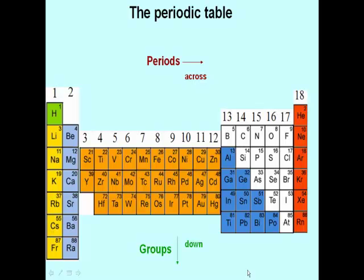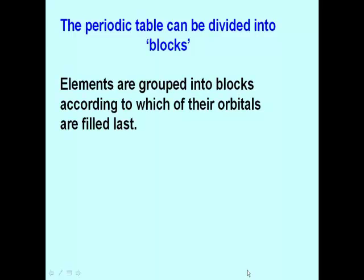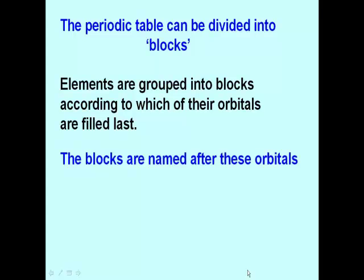Let us go back to the periodic table. As you know, the periodic table is divided into periods which go across and into groups which go down. It is also divided into blocks. You can think of a block as a combination of groups. Elements are grouped into blocks according to which of their orbitals are filled last. The blocks are named after these orbitals.